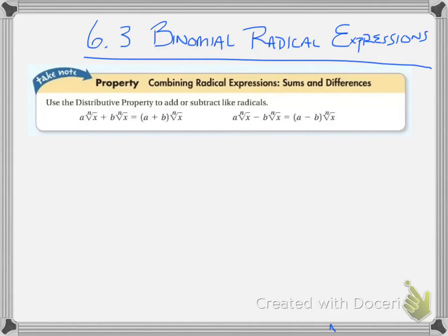We're going to be using binomial radical expressions, which means there's going to be two terms possibly with radicals. This rule determines whether you can add or subtract the radicals. The only way you can add or subtract the radicals is if they're the exact same radical — the same root, same index, and the same radicand, meaning the same number or term on the inside of the radical. All you're going to do is add them similar to like terms.